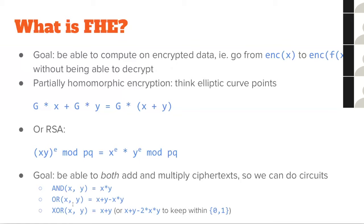For OR, you can invert x, invert y, do an AND and invert again — or use the simpler formula x + y - x*y. If both inputs are zero it's zero; if x is one you get one; it's symmetric for y; if both are one you get 1+1-1=1. For XOR, you can do x + y (if you only care about even/odd), or x + y - 2*x*y to keep values in {0,1}. So if you can add and multiply, you can do pretty much whatever logic gates you want and arbitrary computation.